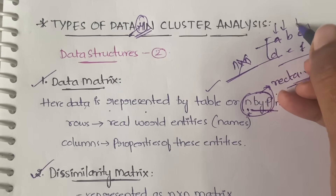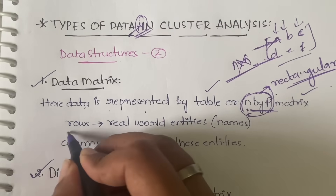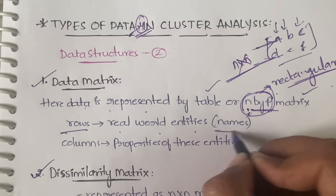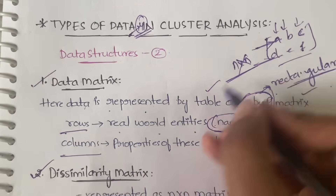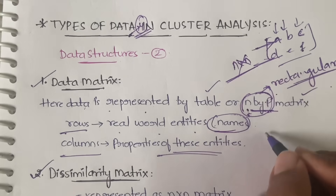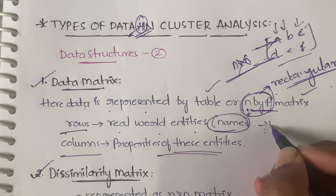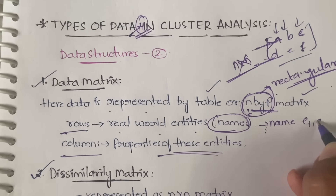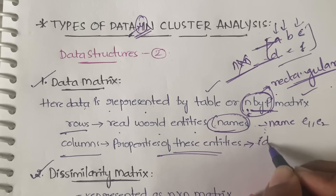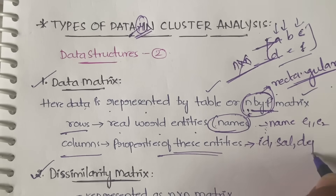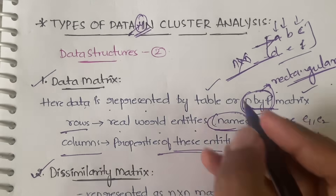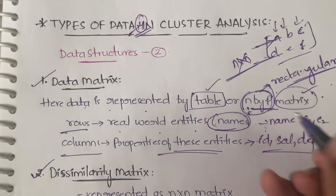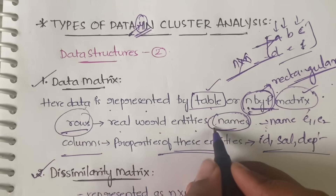In this matrix we have rows and columns. Rows represent real-world entities — for example, names of persons, students, or items. Columns represent the properties of these entities. For example, in an employee table, rows contain employee names like E1, E2, and columns contain properties like employee ID, salary, and department.